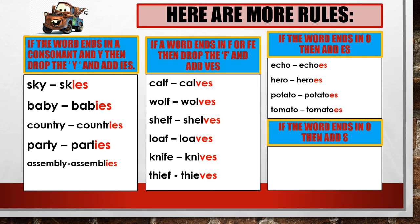Here are more examples of words ending in O, but here you just add S. One piano, many pianos. One photo, many photos. One radio, many radios.